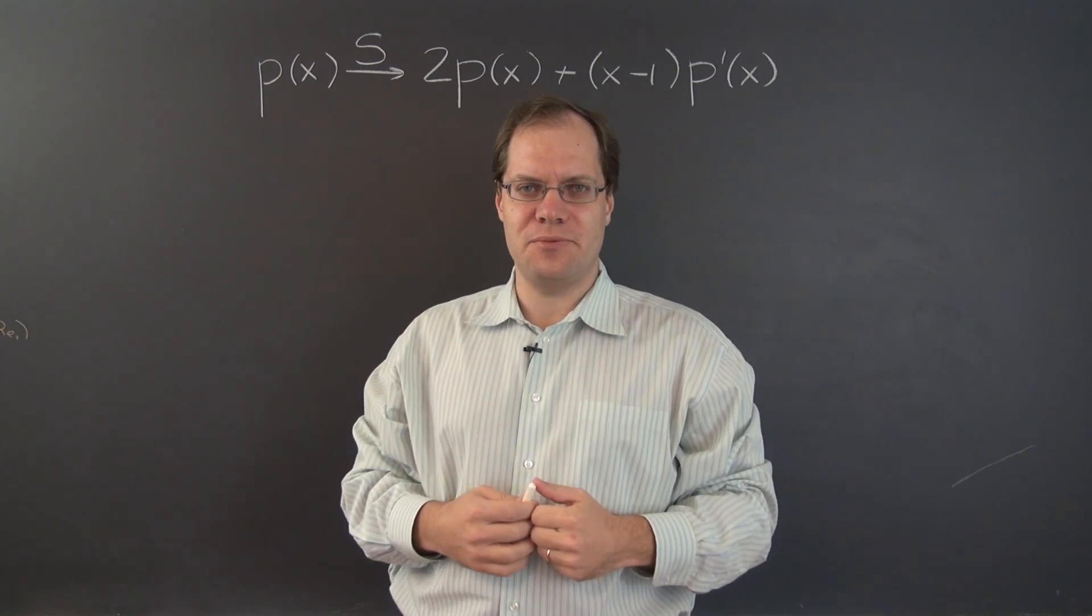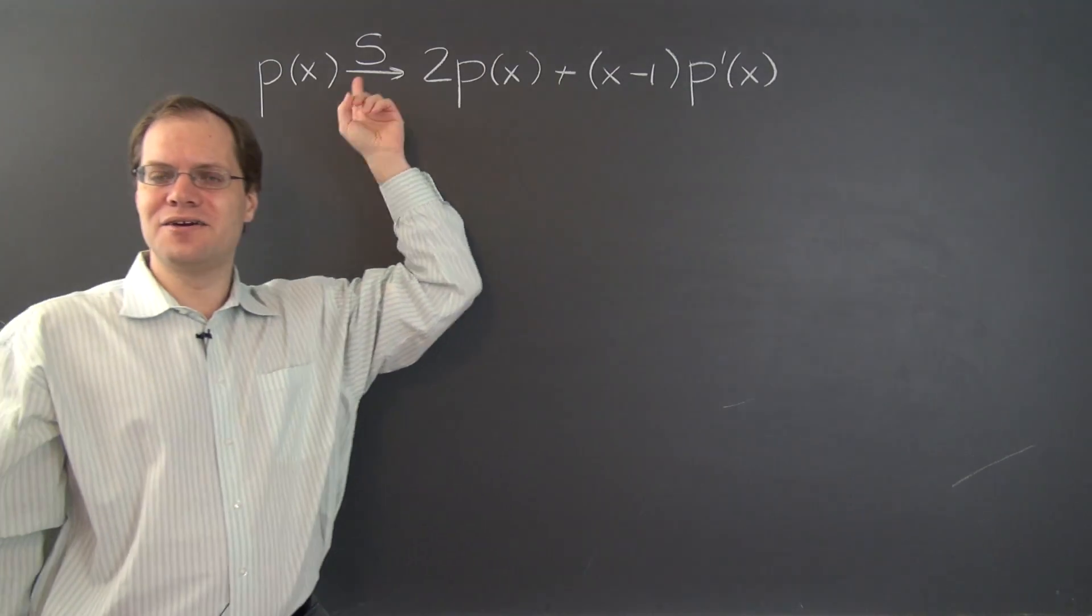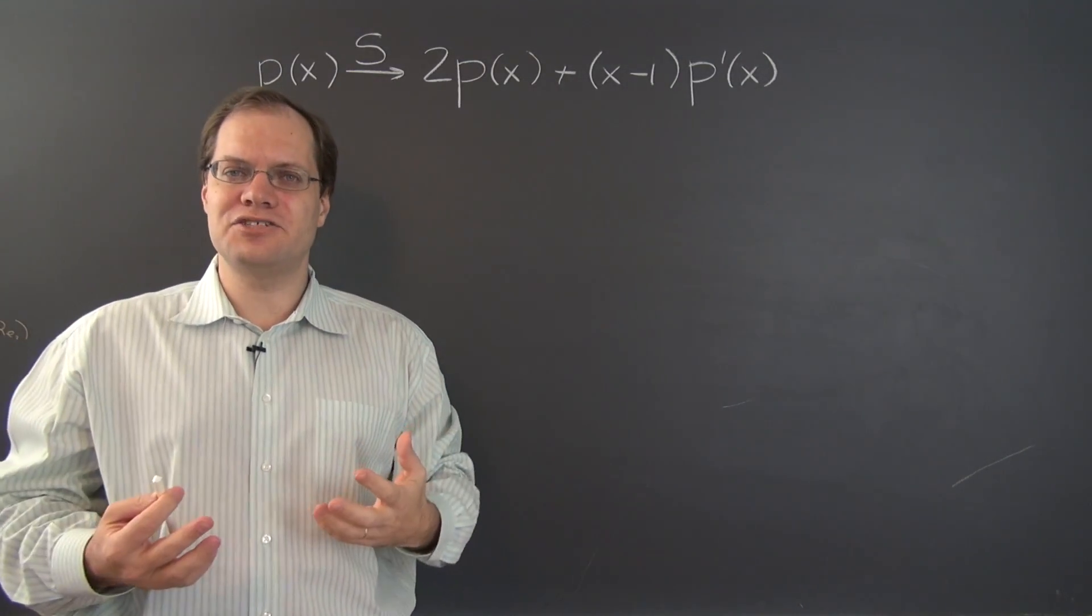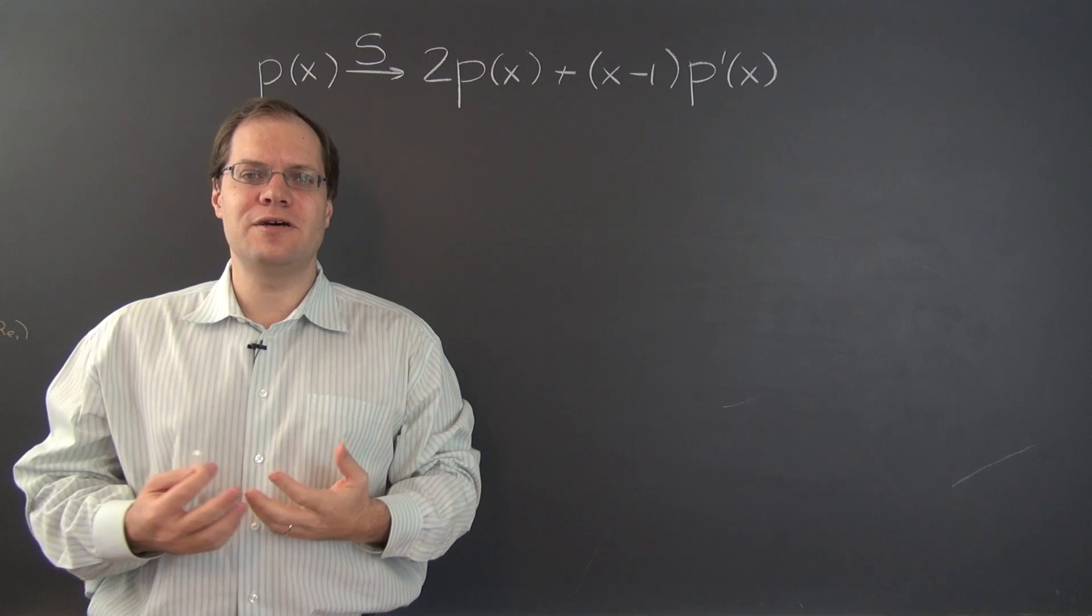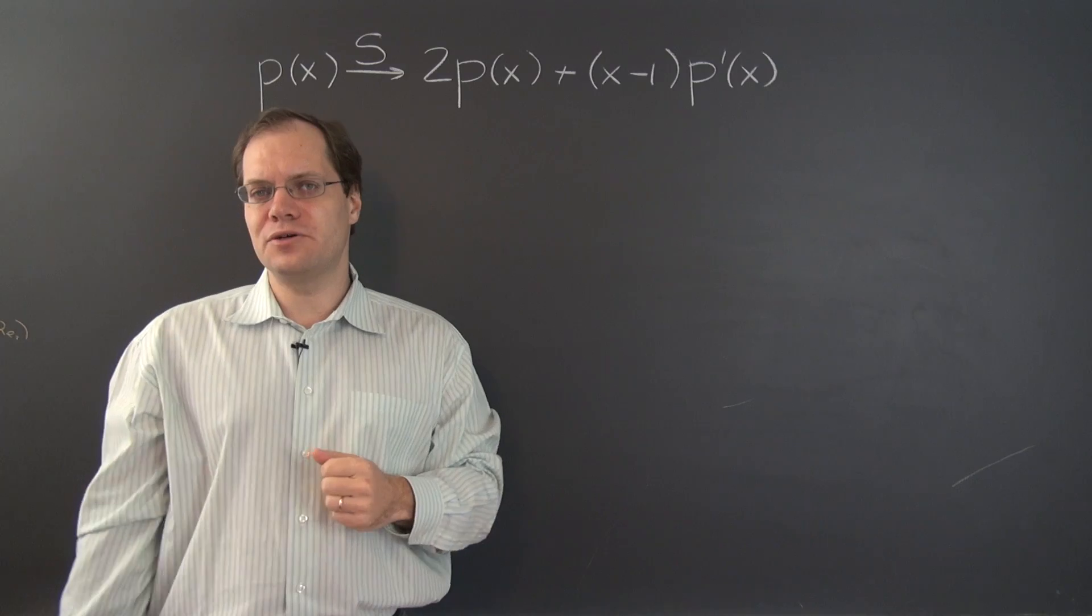Next let's consider a polynomial transformation. Here I have a linear transformation denoted by the letter S because it is, after all, a very silly transformation with absolutely no applications, but it's a linear transformation nonetheless, so it makes for a perfectly good example.